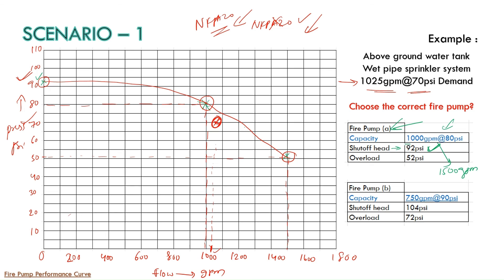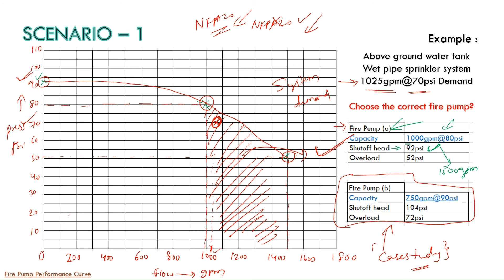So here you have 70 PSI and 1025 GPM. So this particular system demand is inside this performance curve. So this pump is acceptable and we can consider this particular fire pump in our project. However we have fire pump D as well. I hope you understand the concept. So this you can take it as case study and let me know whether this fire pump can also be selected in our project or not.